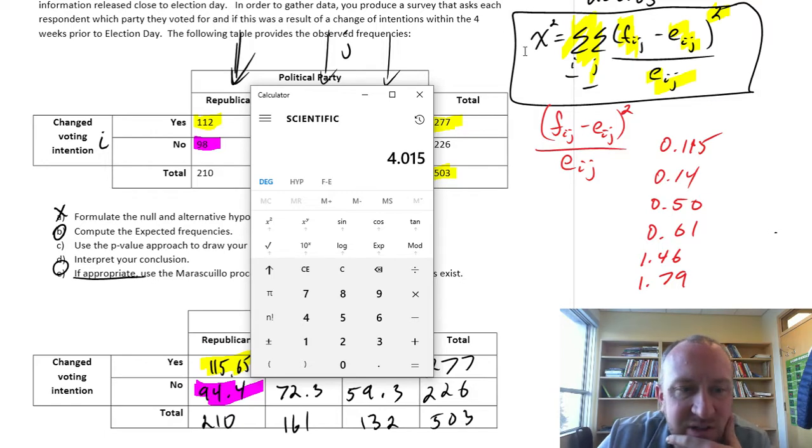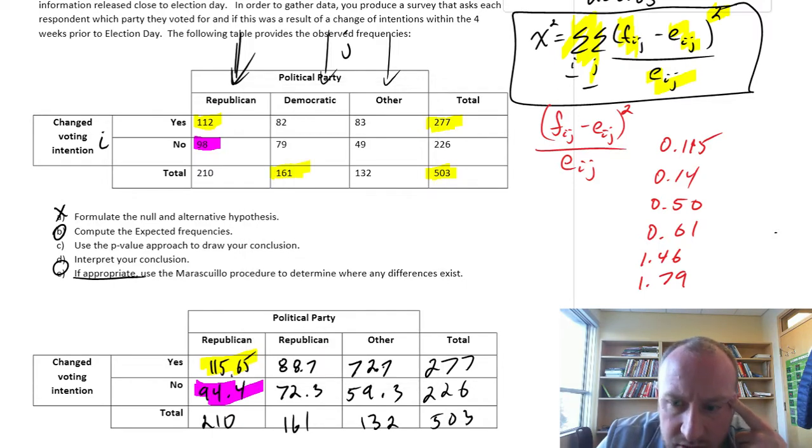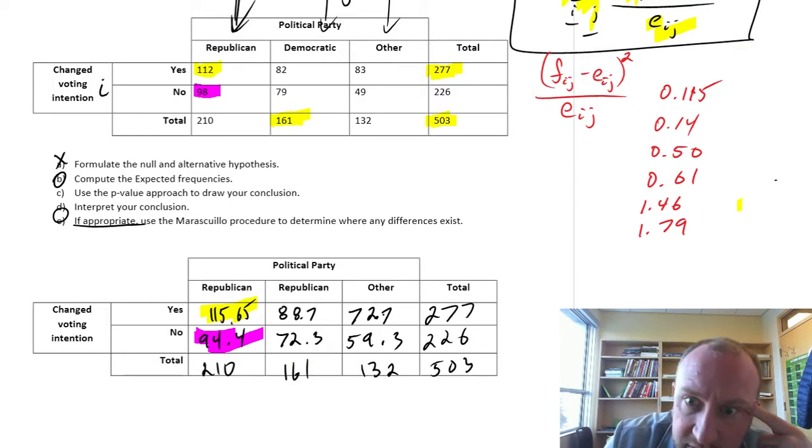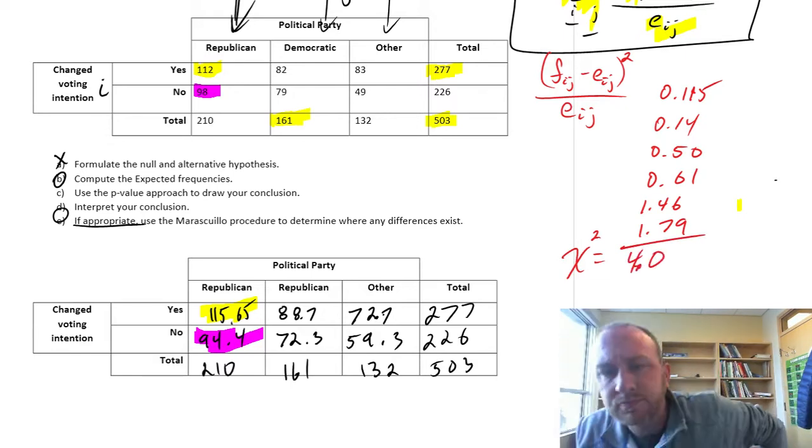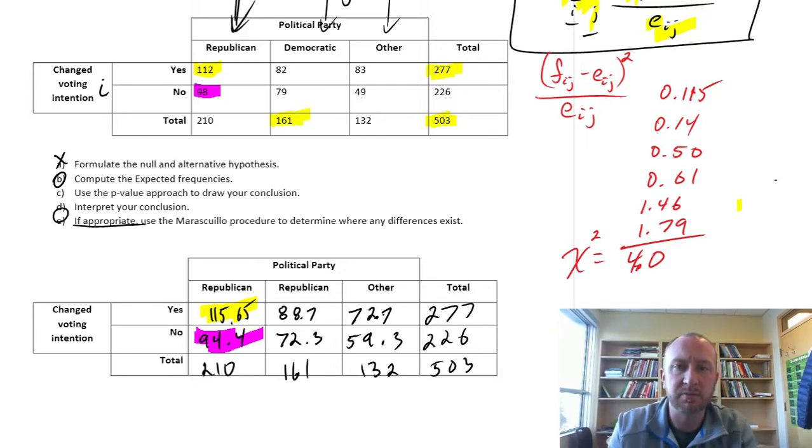So 0.115 plus 0.14 plus 0.5 plus 0.61 plus 1.46 plus 1.79. And so here I have a chi-squared of, well let's just call it 4.0, I guess. It rounds up nicely. So I'm going to have our chi-squared, get my pen back, our final chi-squared value, just 4.0. I'll keep it just to one decimal. Okay, so that's it. We've got our test statistic.